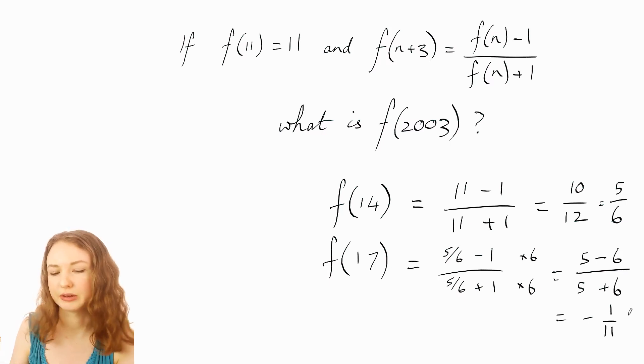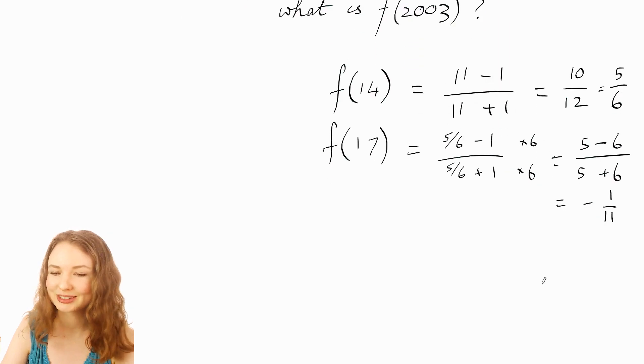Okay we've got f of 17. Still no idea of a strategy for how to work out f of 2003 but let's just keep going and see what happens. So the next one would be f of 20.